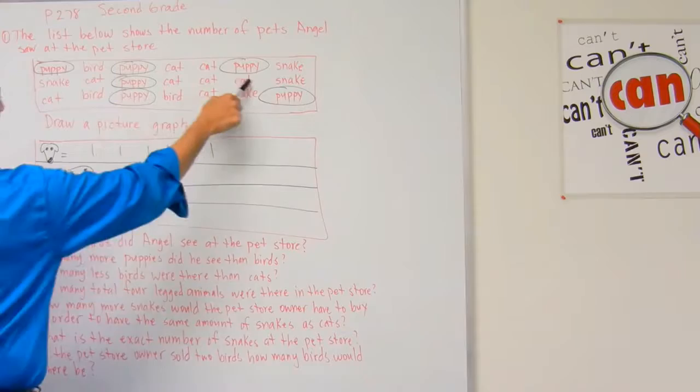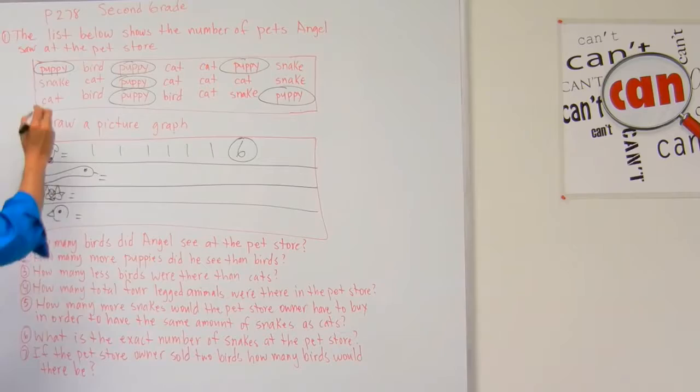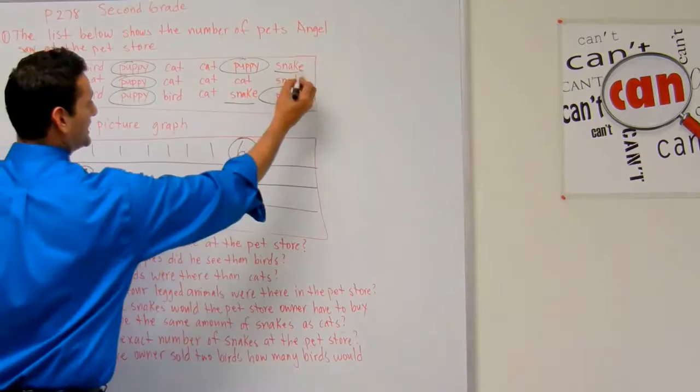Now let's take a look at the snakes. Here I've got one, two, three, four — I've got four snakes, so I'm going to mark one, two, three, four snakes there.